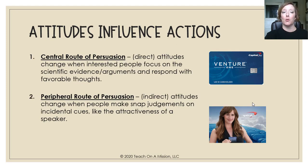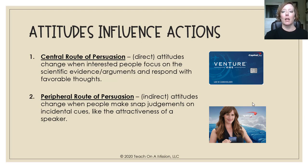Think about how advertising might use these different routes. The central route of persuasion is a direct way of giving you information and trying to persuade you. Attitudes change when already-interested people focus on scientific evidence or arguments and respond with favorable thoughts — they use the data to make an educated decision. The peripheral route of persuasion is an indirect way of changing attitudes, where people make snap judgments on incidental cues — like the attractiveness of a speaker, the fact that a speaker is well known, or memories triggered by a classic jingle.